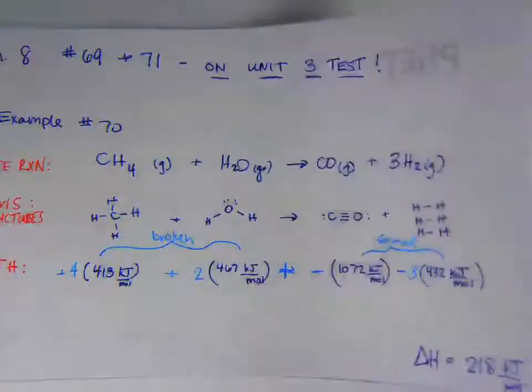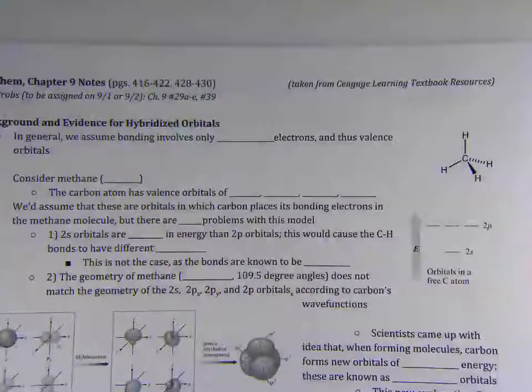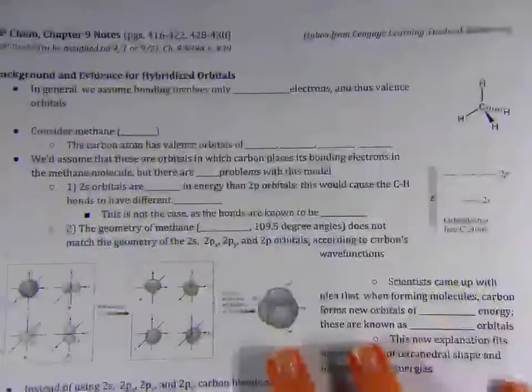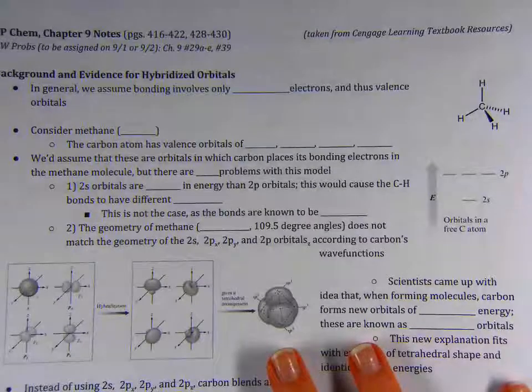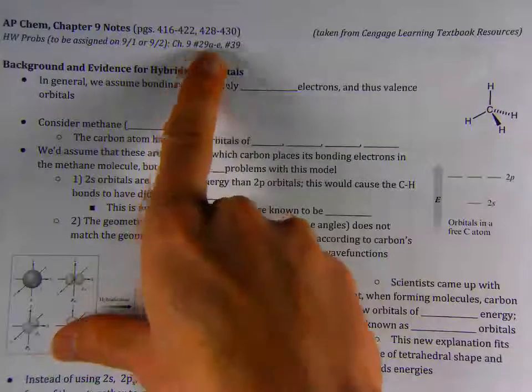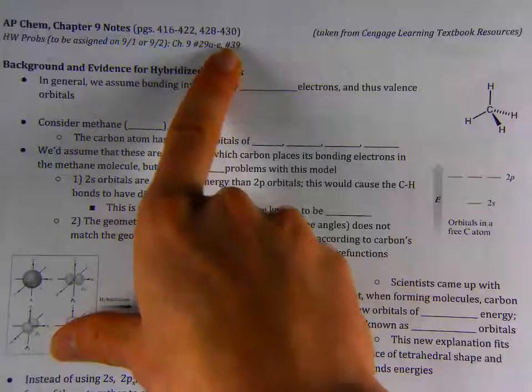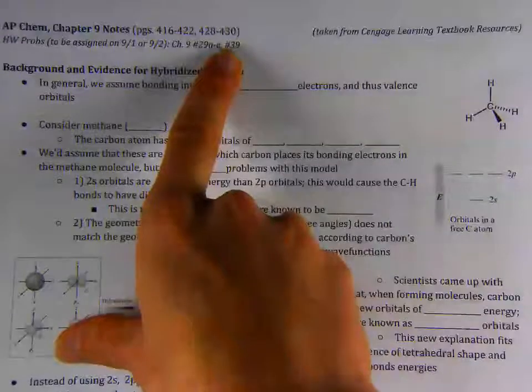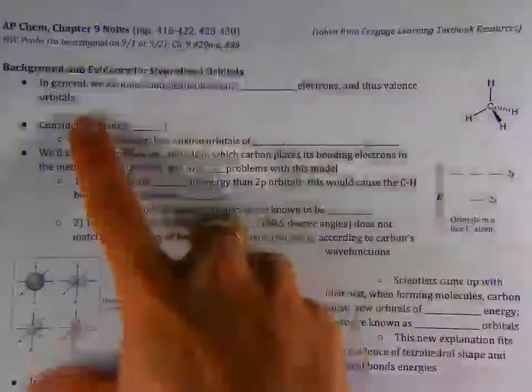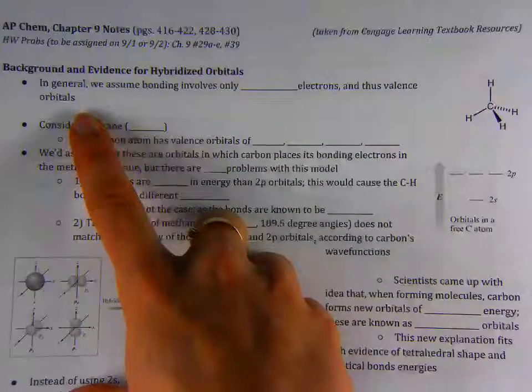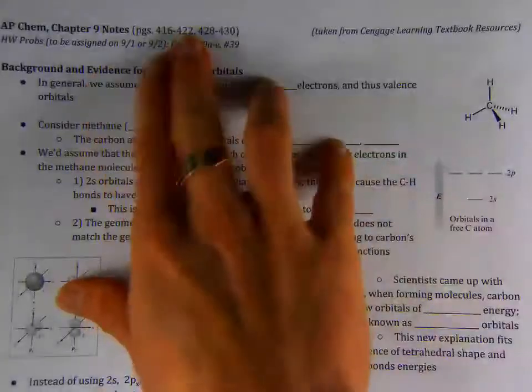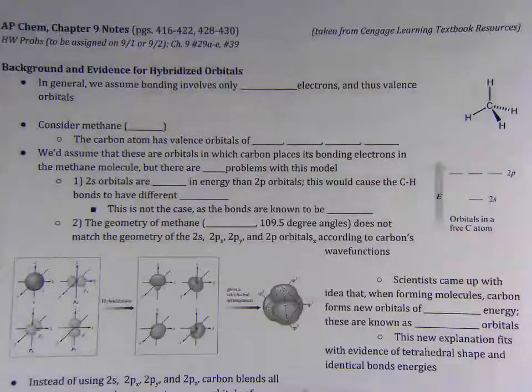So, moving on to Chapter 9. And this is on the website. You can print this out, or you can pick up a copy outside of my classroom door if you need to. Chapter 9, there's only two homework problems associated with it. It's 29A through E and number 39. So you should work those out after we meet in class, or you can probably work them out after you finish watching this video if you want to get a little bit ahead. All right, so Chapter 9 is all about hybridized orbitals.